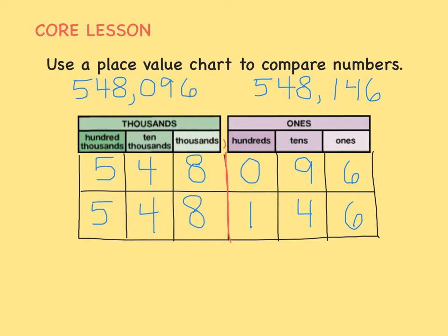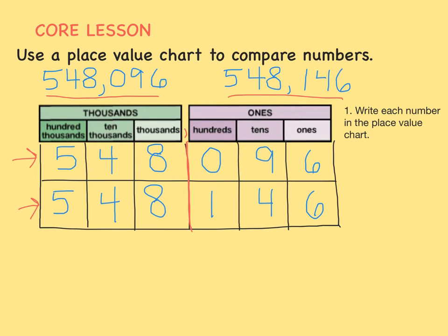We start by writing both numbers in the place value chart. So this number is here, and this number is down here. What do we need to do next? Look at the digits in the greatest place value, so that means we are going to start on the left side of the number and work our way right.